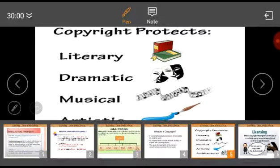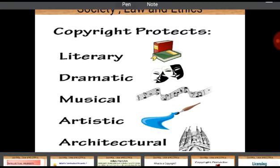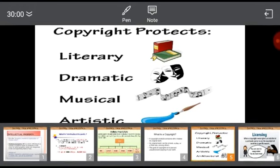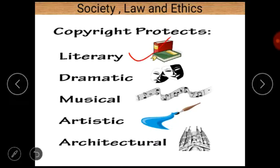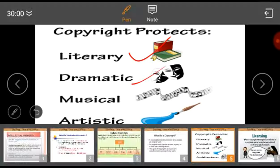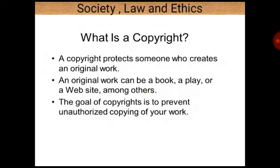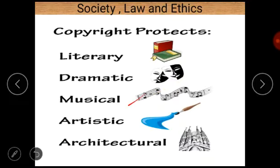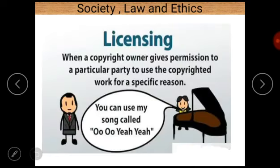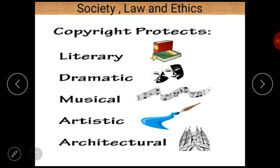Now there is a diagram showing what copyright protects. First is literary — meaning regarding to books. Second is dramatic — any drama or play. Third is musical — any composition of a song or any music composition. Fourth is artistic — any painting or any architectural work. So these are all what copyright protects.